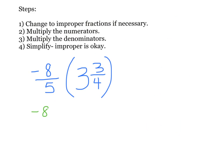So negative 8 fifths times — I'm going to change that to a dot — and I need to change the mixed number 3 and 3 fourths to an improper fraction. I do 4 times 3, which is 12, plus 3 is 15. So that turns into 15 over 4.